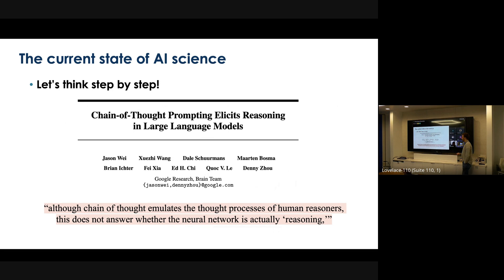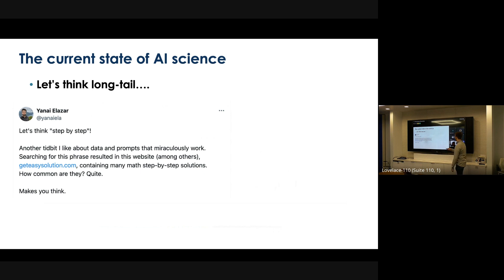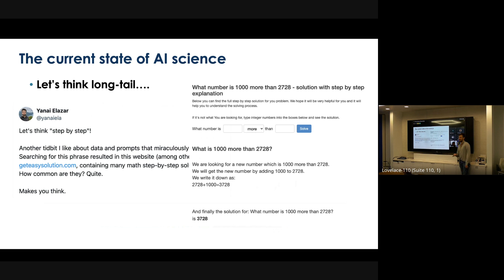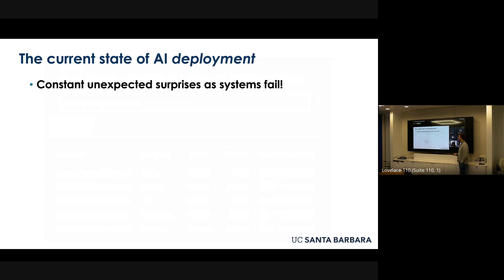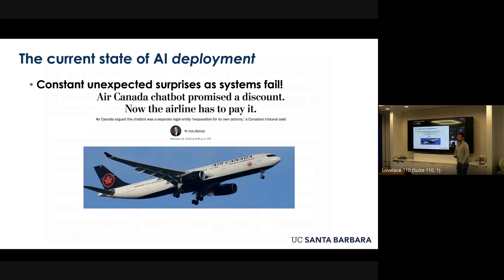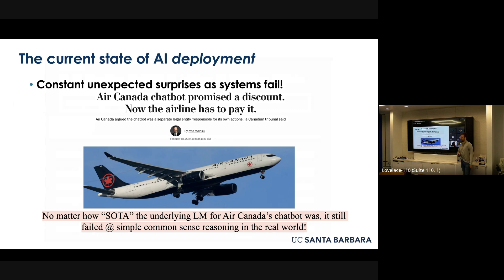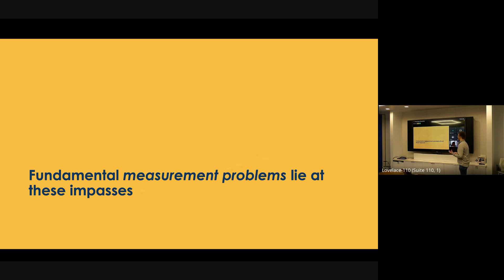We have observations that we don't really understand where they come from. Chain of thought was discovered as a way to get the network to reason, and then researchers found examples of websites with 'Let's think step by step' encoded in text that are actually well-represented in a lot of pre-training datasets. We also have constant surprises as systems fail in the real world, even as these systems are amazing on benchmarks. Presumably the Air Canada chatbot that gave a fake discount to a customer — which Air Canada was then on the hook to honor — was very good at common sense reasoning benchmarks, and yet it still failed to follow that policy.